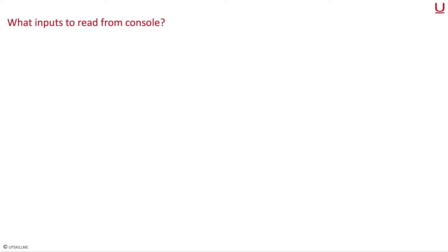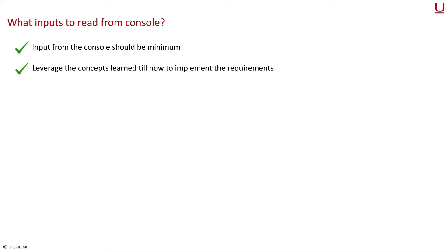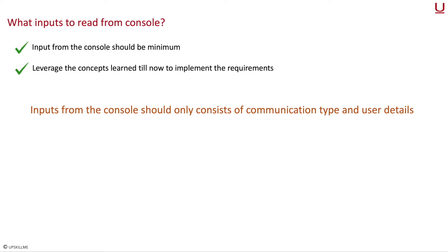Since we will be reading inputs from the console, the first thing we have to think about is what inputs to read. We have to decide in such a way that reading inputs from the console should be minimalistic, and we should leverage the concepts learned till now to accomplish the desired functionality. The input from the console should only consist of communication type and user details. Example inputs are shown here.